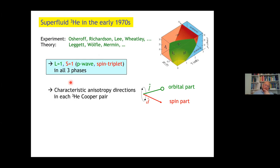We know immediately from that information that in every Cooper pair, in orbital space and in spin space, there is a characteristic direction corresponding to L equal to 1 and s equal to 1.